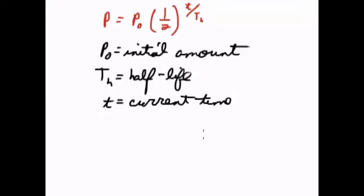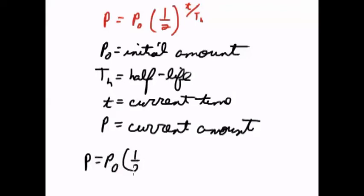Little t is equal to the current time, and p is equal to the current amount. What happens is, if I have the current time is one half-life, then I would have p equals p sub not times one-half to the t sub h over t sub h, which cancels out, so I'll have p equals one-half p sub not.